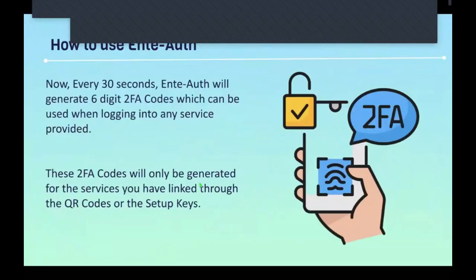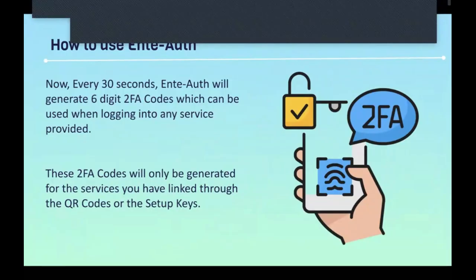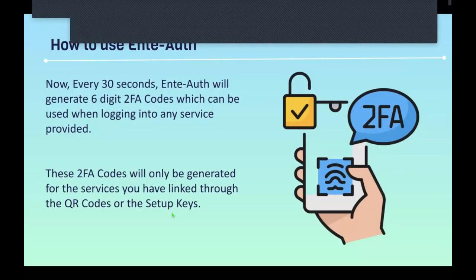Now, every 30 seconds, Ente Auth will generate a two-factor authenticator code which can be used when logging into any linked service. These two-factor authenticator codes will only be generated for services you have linked through the QR code or setup key. For example, if you only added your Instagram service, it will only send a two-factor authenticator code for Instagram.